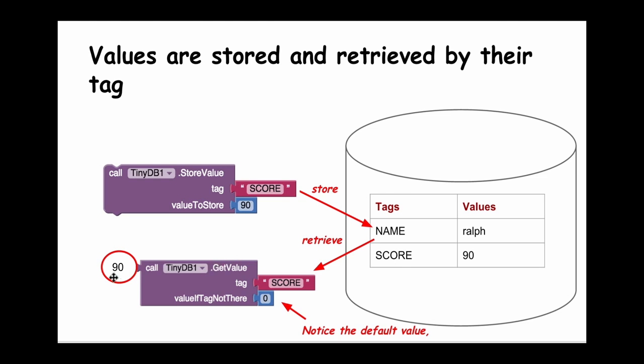When I want to retrieve the value of the person's score, I need to provide this tag. I would get back, in this case, the value 90, because SCORE is one of the tags in the database. But notice that in this case, the default value I'm using is a number.